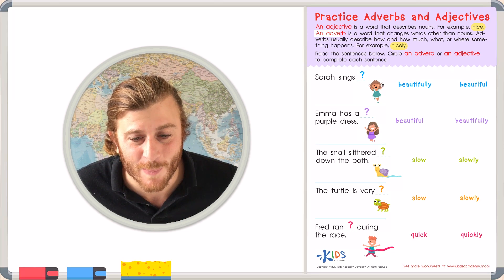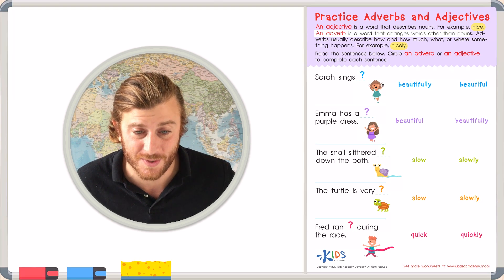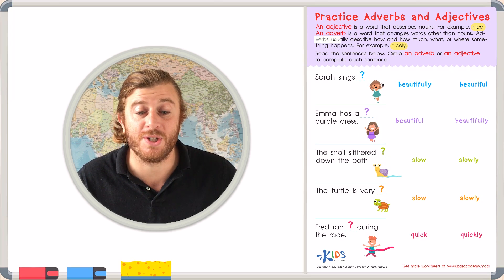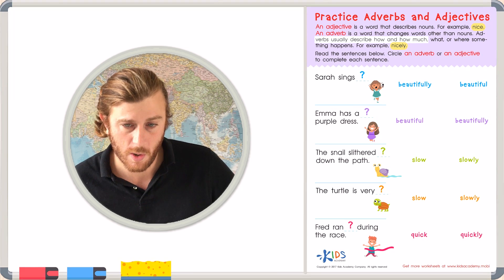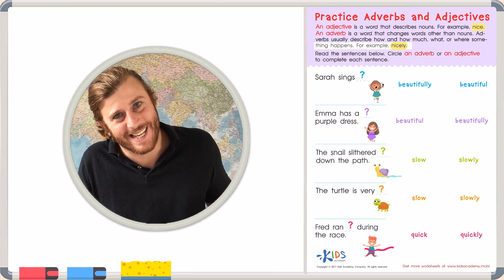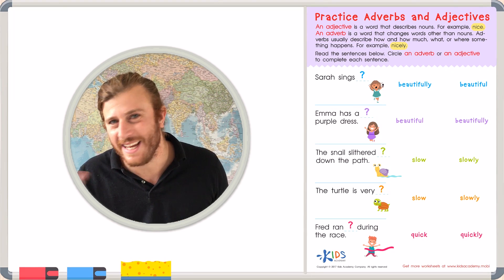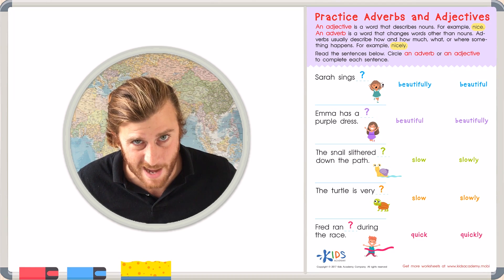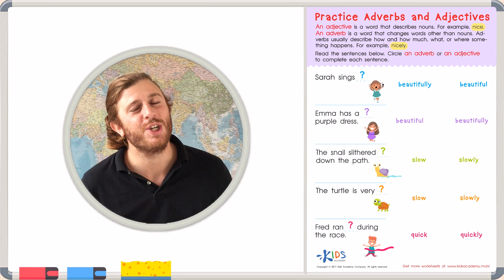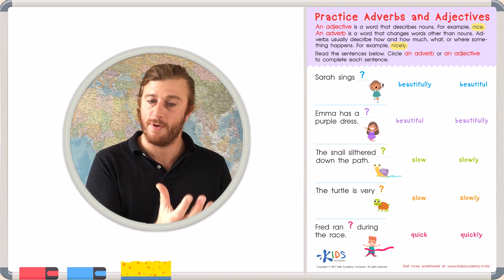An adverb is a word that changes words other than nouns or describes words other than nouns. Adverbs usually describe how, how much, what or where something happens. For example, the word nicely. The girl plays nicely. Nicely is not describing the word girl, the noun. Nicely is describing how the girl plays. She plays nicely. So nicely, the adverb, describes the verb.